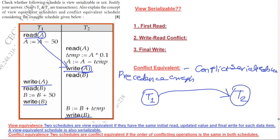Now check another write operation. This write operation is at T1 on variable A. We have to check in T2 if there is any read operation on variable A. Yes, there is a read operation occurring before this write. So this arrow will go from T2 to T1. There is also a write operation in T2, so again the arrow goes from T2 to T1.